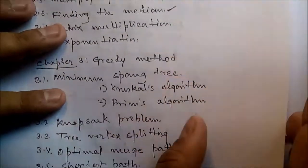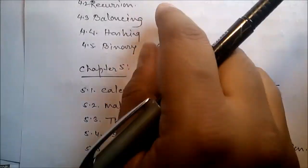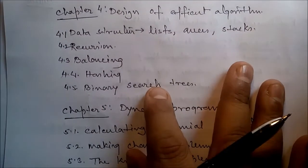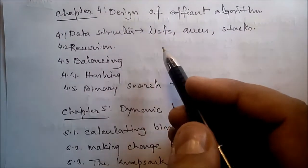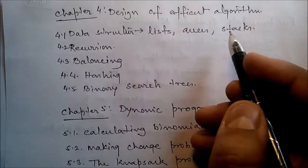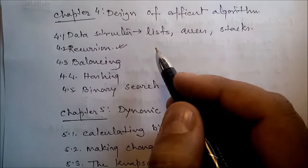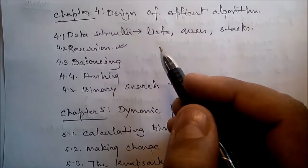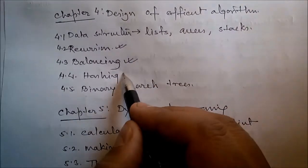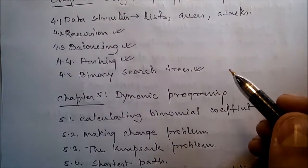In Chapter 4, we'll talk about the design of efficient algorithms. We'll cover a brief introduction to data structures — lists, queues, and stacks. Next, recursion: what is recursion, the importance of recursion, applications of recursion, limitations of recursion, balancing, hashing, binary search trees, and optimal binary search trees.